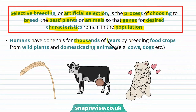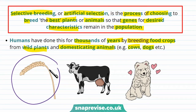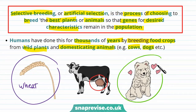Humans have done this for thousands of years by breeding food crops from wild plants and domesticating animals such as cows and dogs. For instance, through artificial selection of wheat, humans were able to turn it into a much more efficient crop. Through selectively breeding cows, they were able to increase milk yield. And dogs have actually been domesticated from wolves.